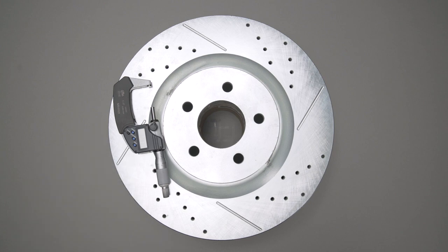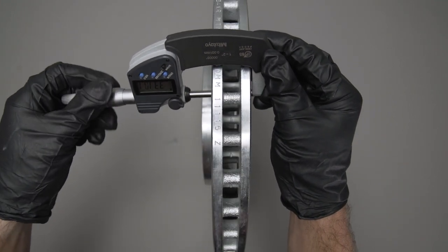To accurately measure against the minimum thickness, use a micrometer at several points on the surface of the rotor where it meets the pads.